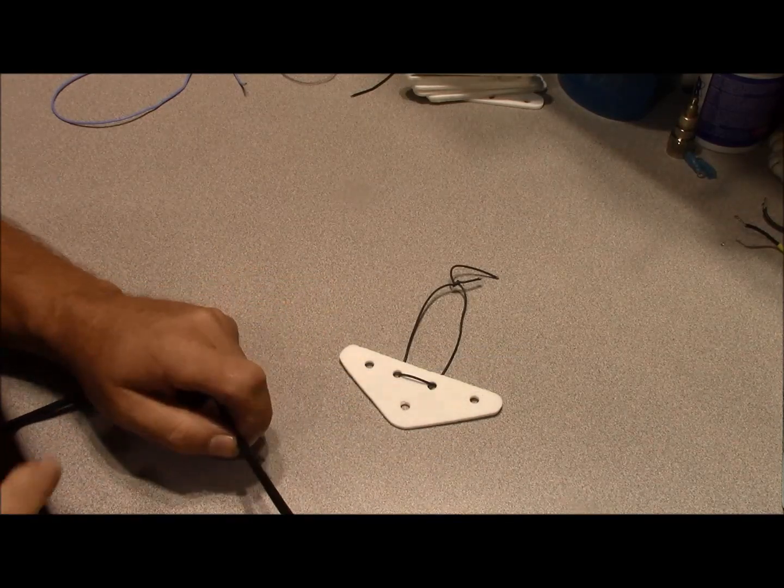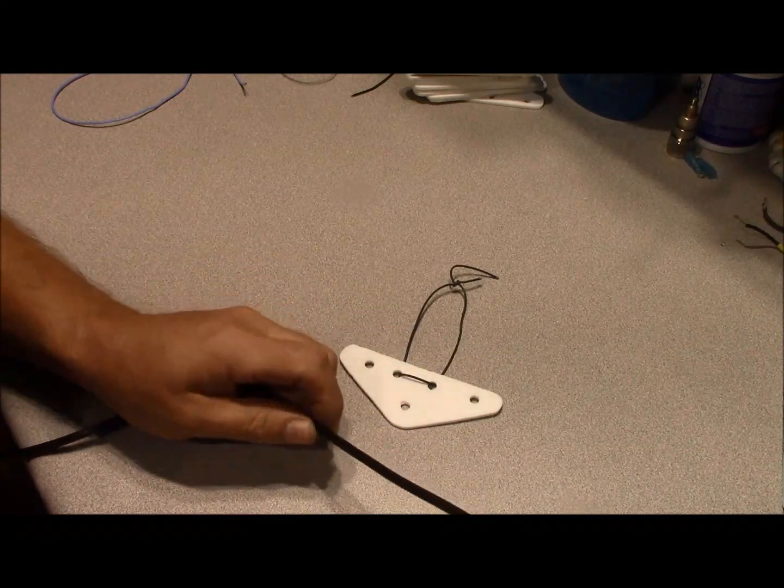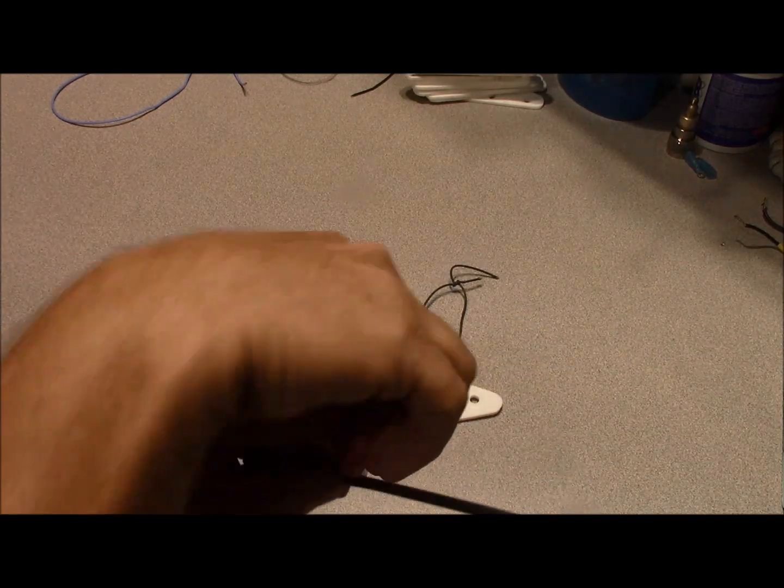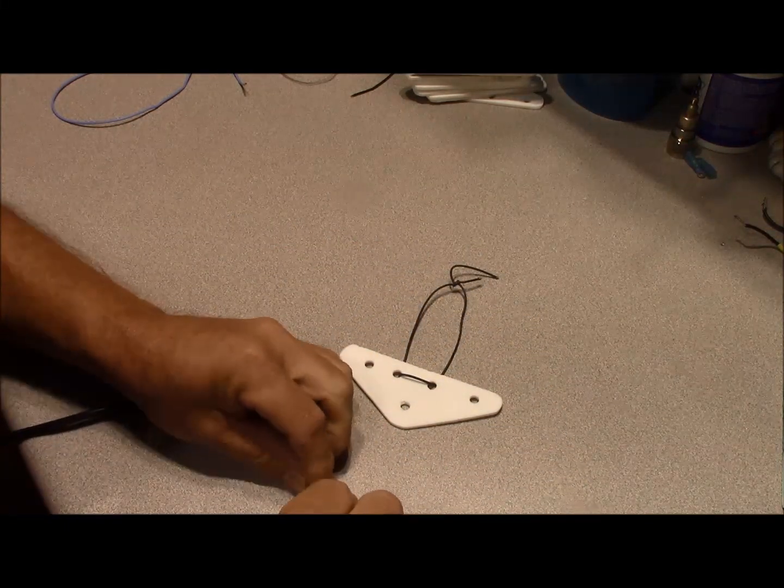If we set this up for a coax feed point, I'm going to show you how to do that real quickly. Start by prepping your coaxial cable. Just remove enough of your outer insulation here.